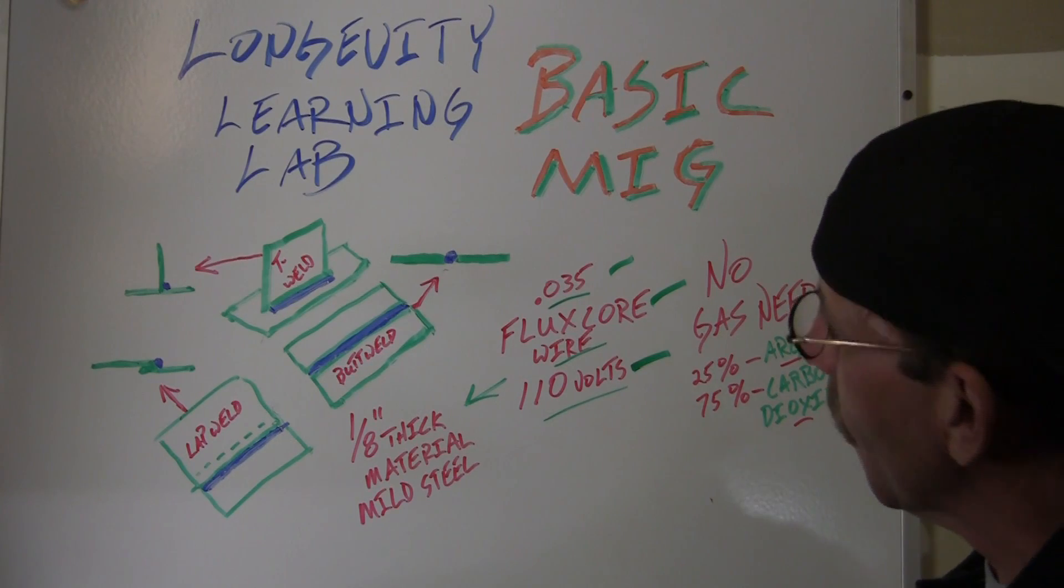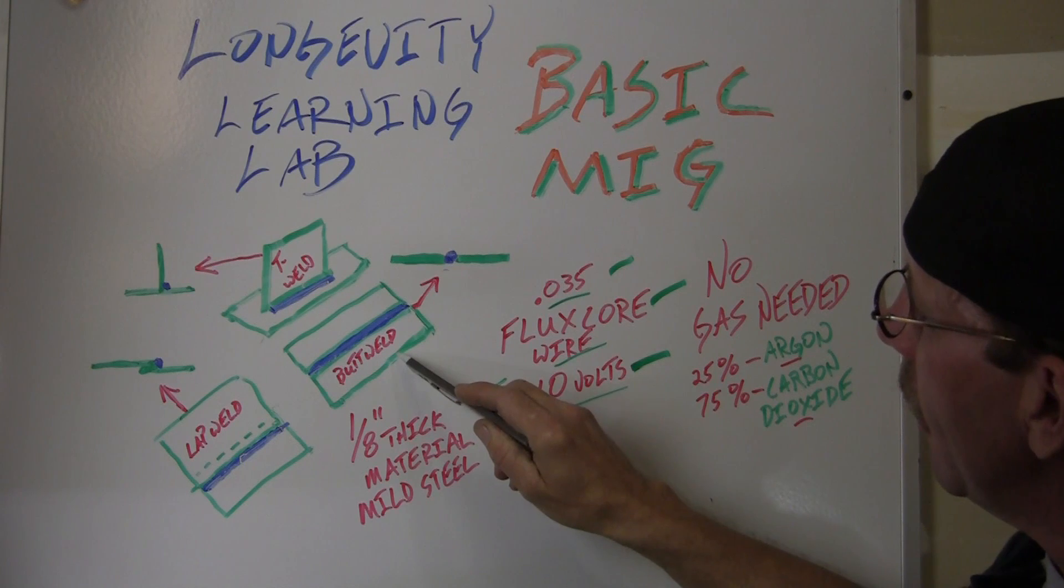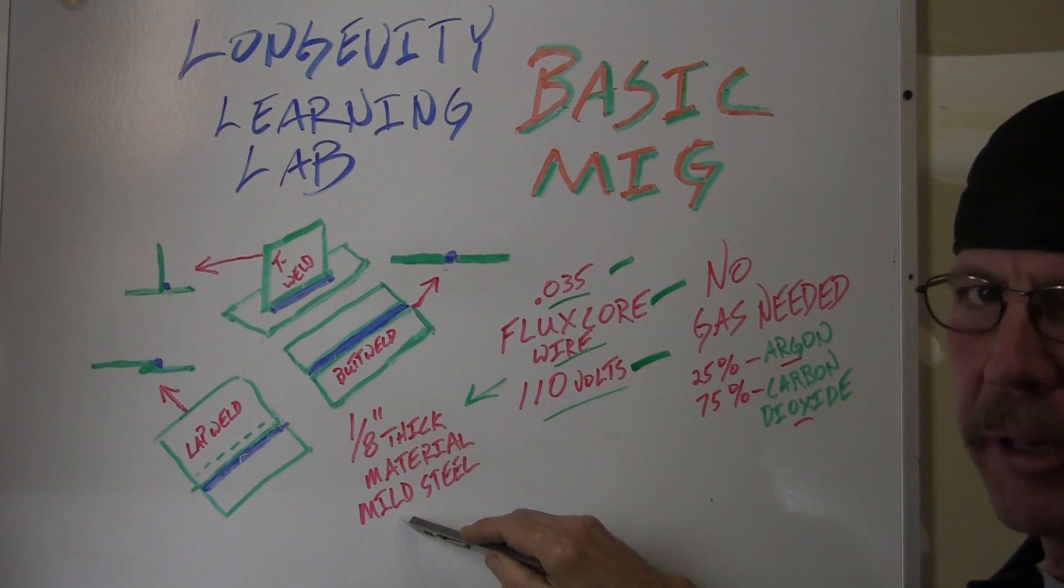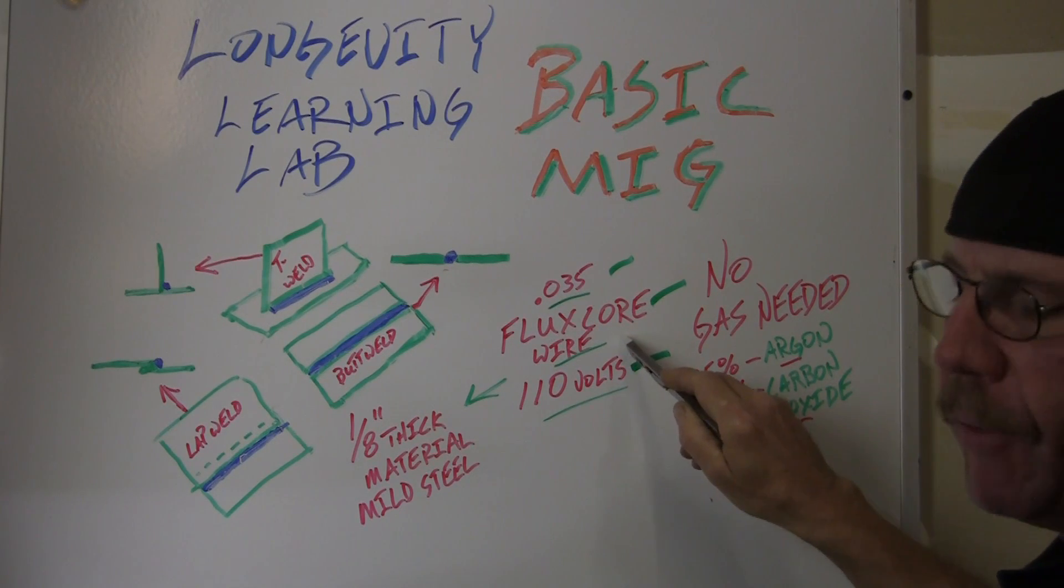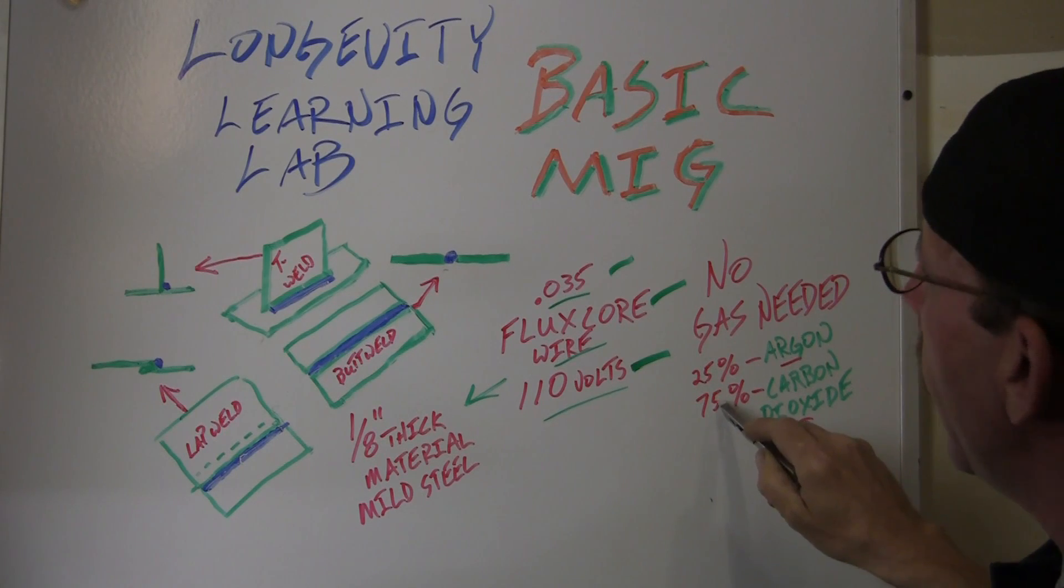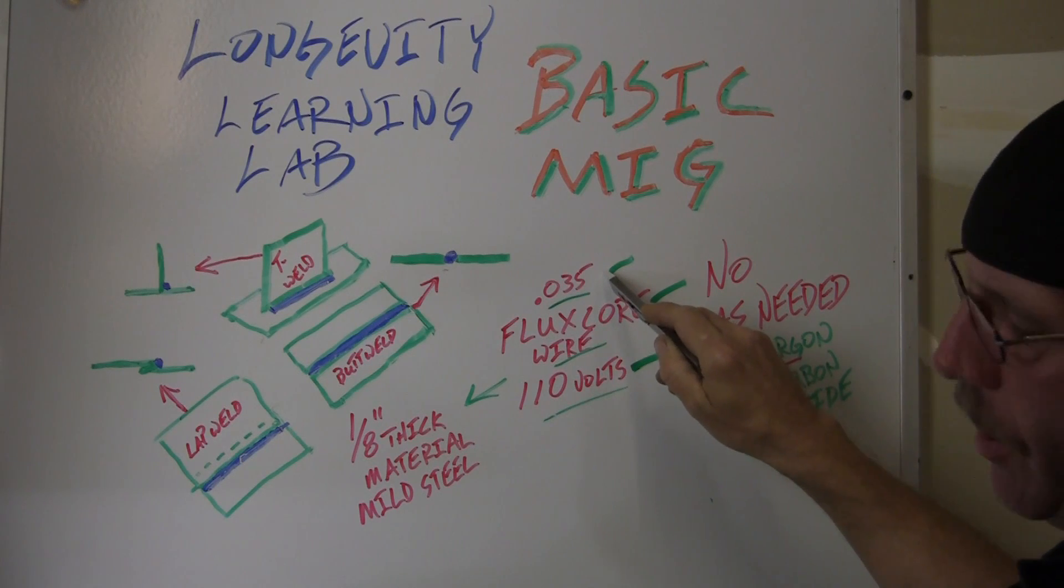We're going to be using an eighth of an inch thick mild steel metal. We're going to use a flux core, which means you don't have to use the gas, which is the CO2 argon mixture. We're going to use 110 volts and 0.035 wire.